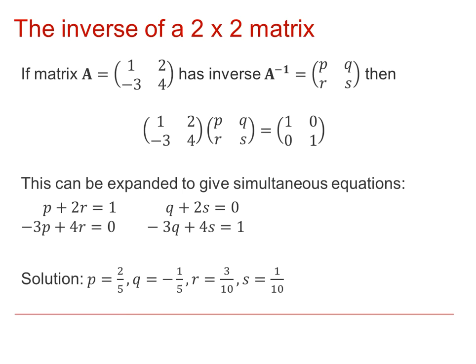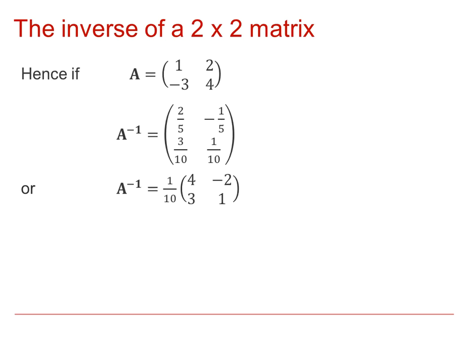That means I can write those values into the matrix for A inverse, which I've done on the next slide. And then, I've taken out the common factor there of 1 tenth, and leaving us with the numbers 4, -2, 3, and 1 inside the A inverse matrix.